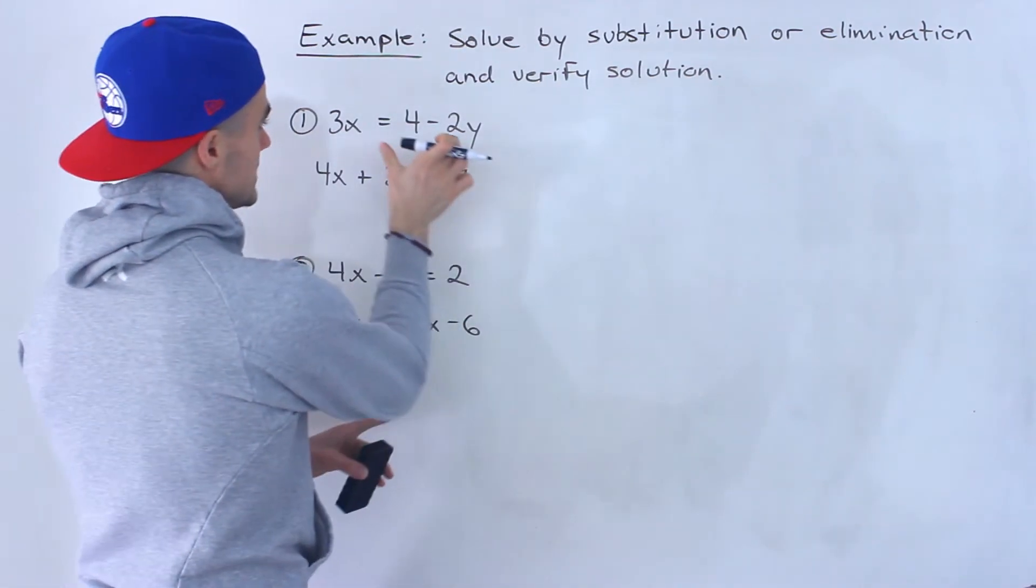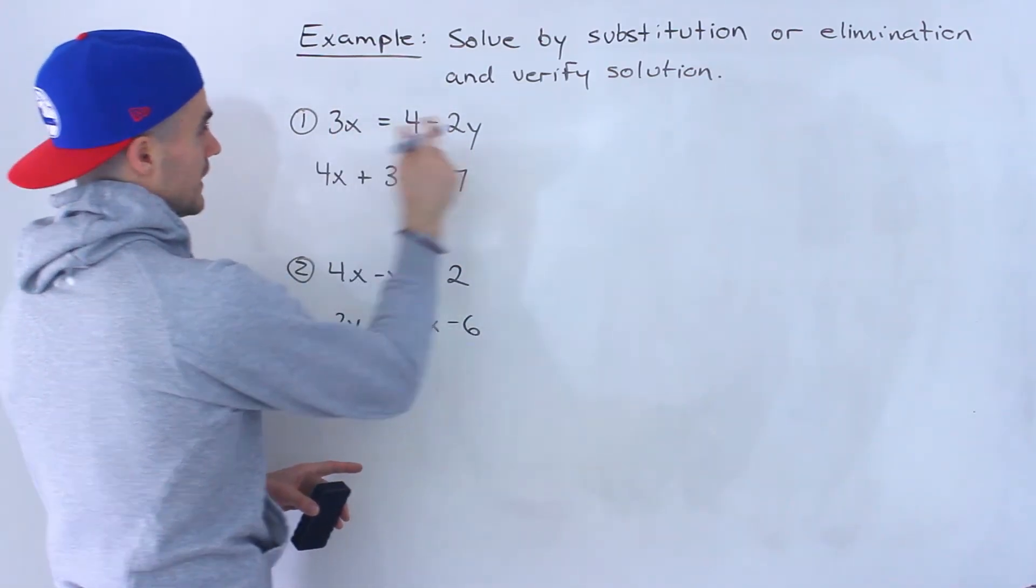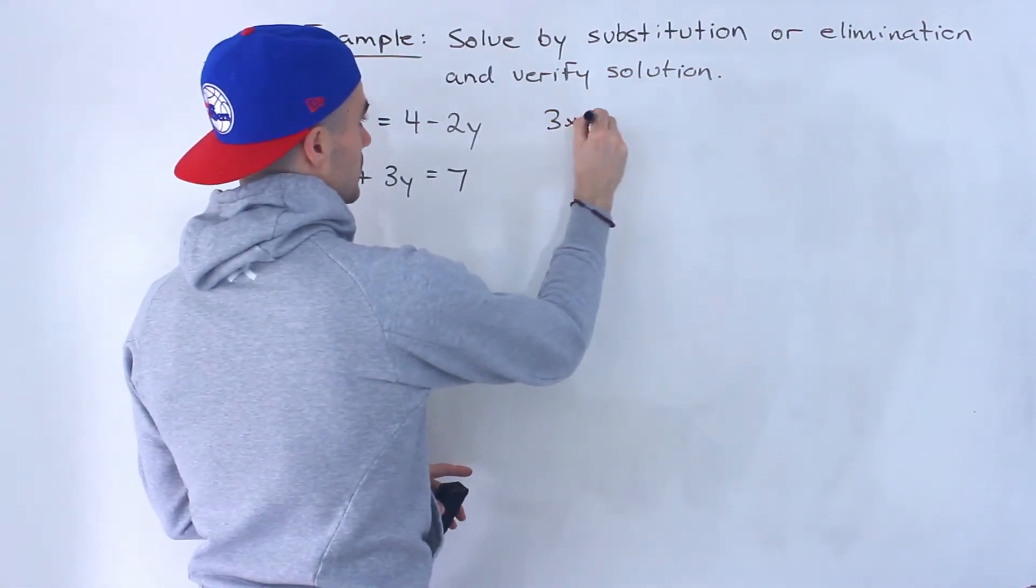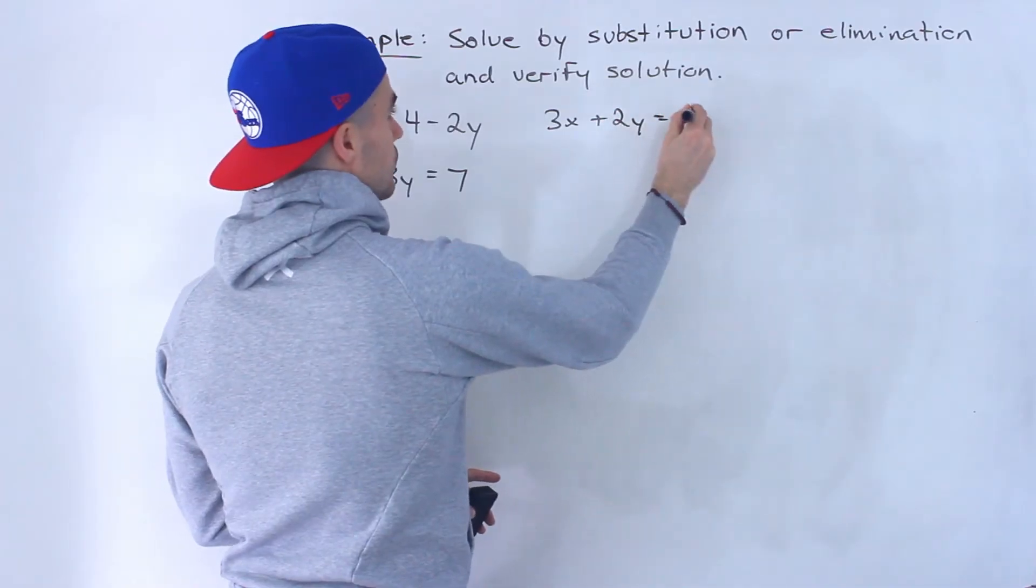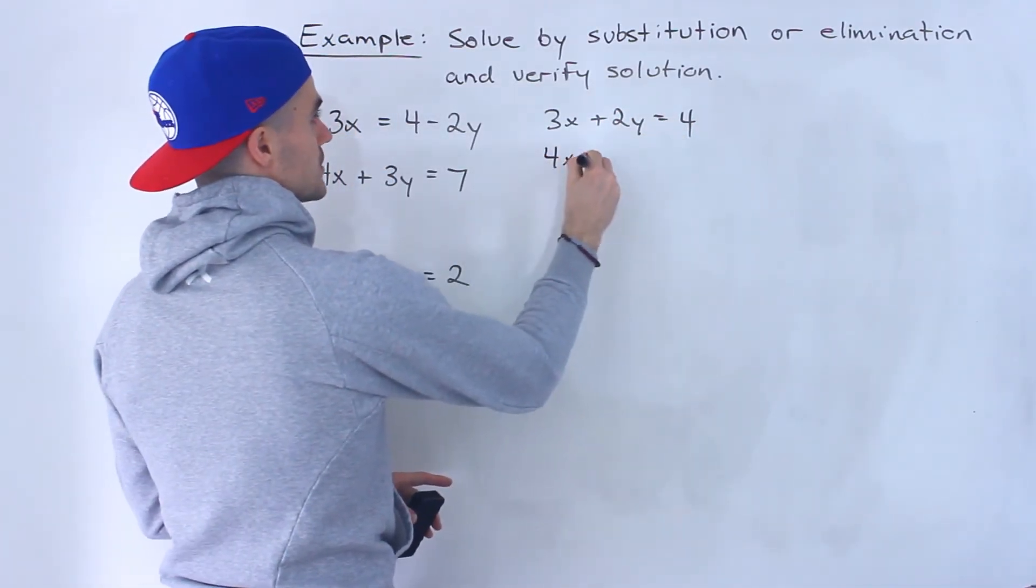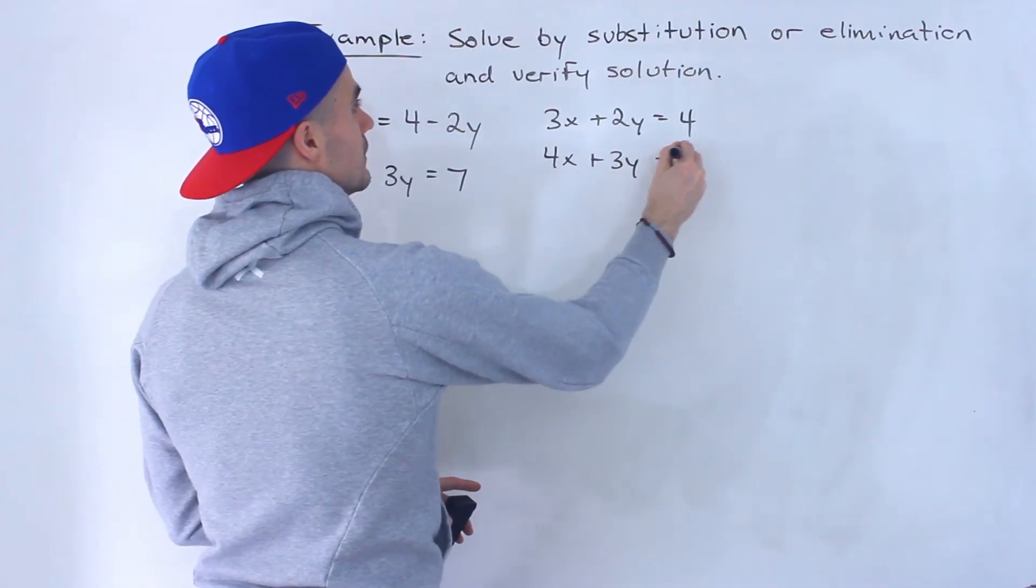I'm going to take this first line and put in this format so I'm going to bring the negative 2y over so I'll have 3x plus 2y equals 4 and over here we'll have 4x plus 3y is equal to 7.